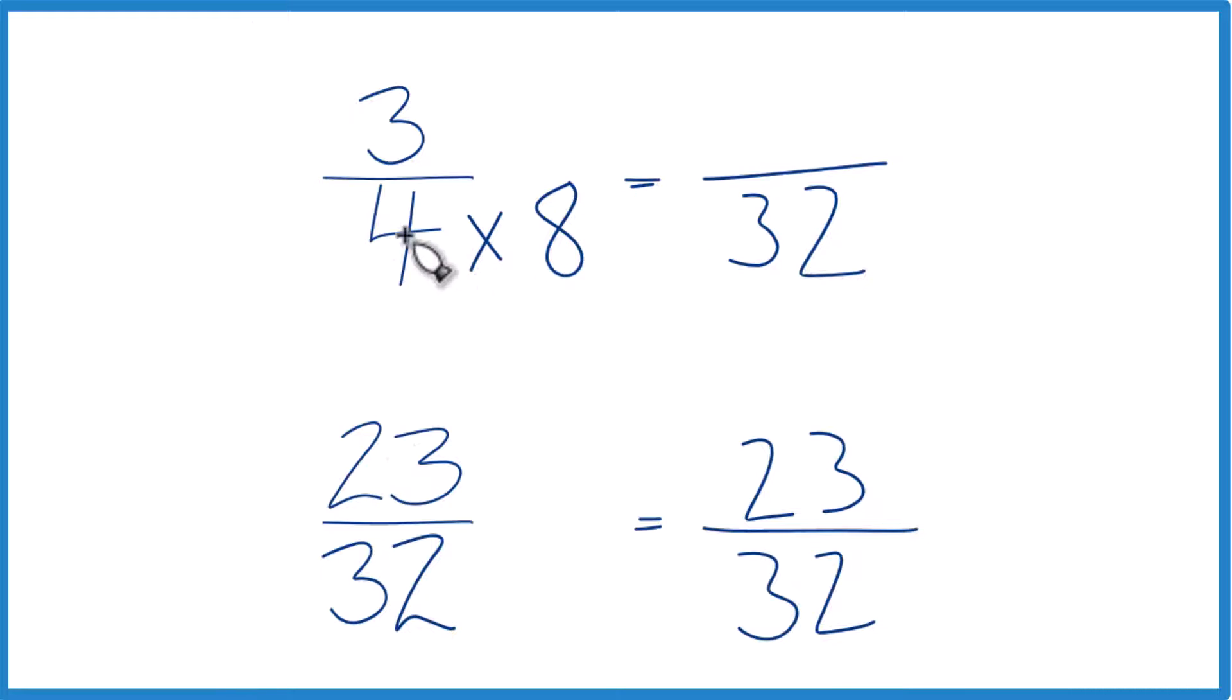But up here we can't just multiply the denominator by 8. We also need to multiply the numerator by 8, because 8/8, that's just 1. So we're multiplying by 1. We don't change the value, just the way it's represented. 3 times 8, that's 24.